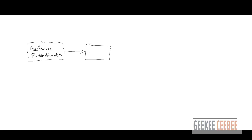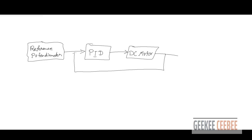Let's take a quick look at the block diagram. We have a reference signal coming from a reference potentiometer going into a PID block. This is where our controlling function is, which sends the voltage to the DC motor to control its position. From there, we do a loop back — this comes from our feedback potentiometer.